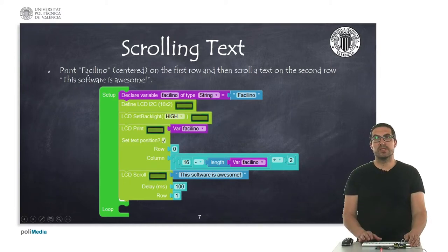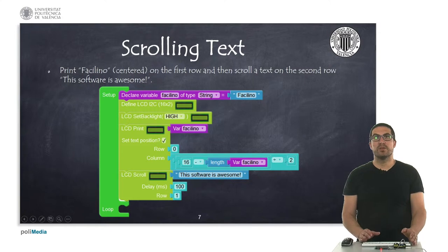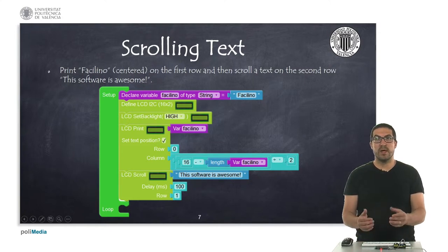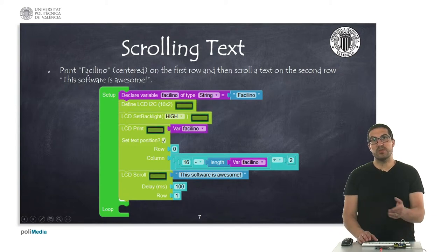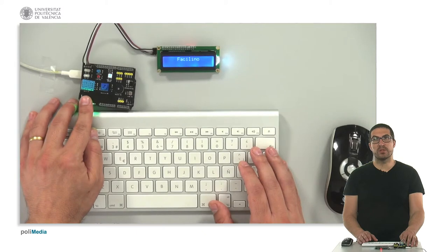On this third example, we're going to see how to scroll text. On the first row, it's a static text, but on the second row we have a text scrolling. I have already uploaded the code onto the board, so let's switch to the overhead camera to see how it works.